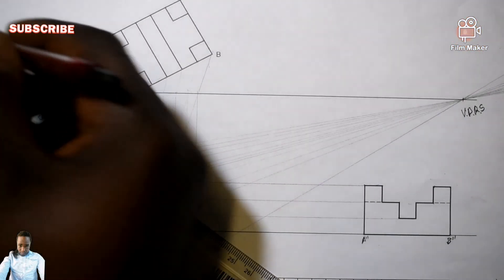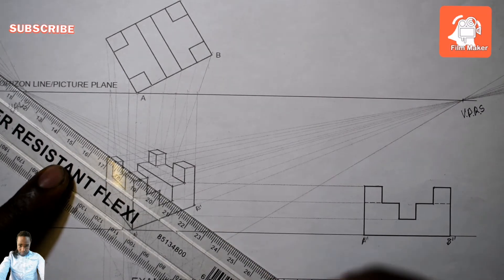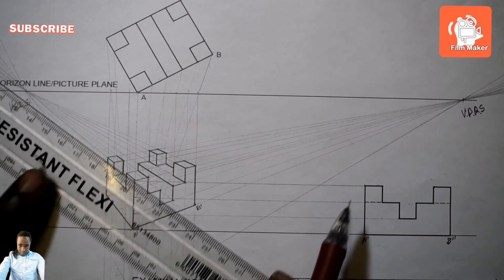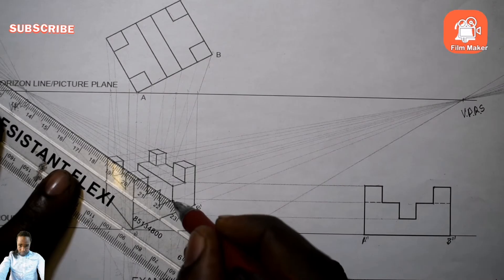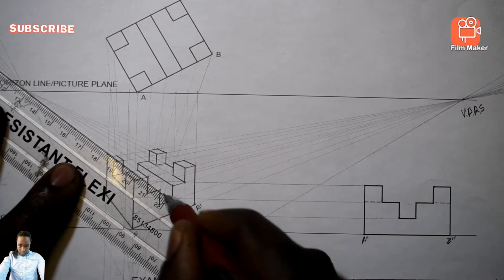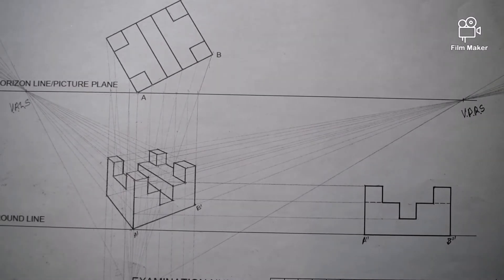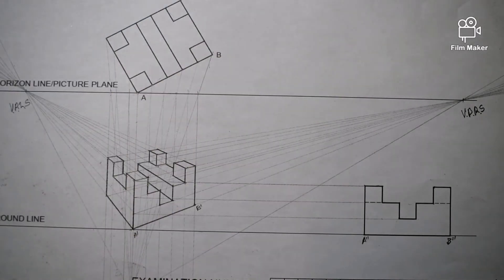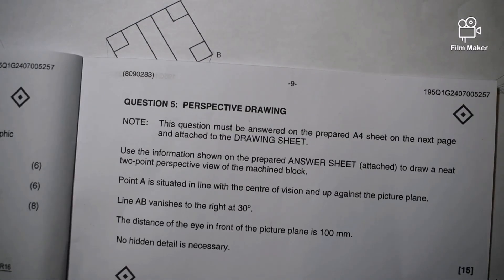Now it's going to be dark. Fortunately enough it's passing through the same point right here, so I'll have to get this one dark from here till right there — dark. That's how you go about it. This was a previous question paper of engineering drawing written on the 7th of August 2024 — Question 5, Perspective Drawing.